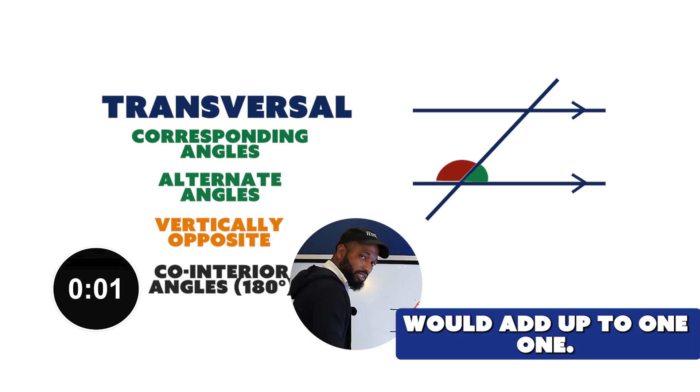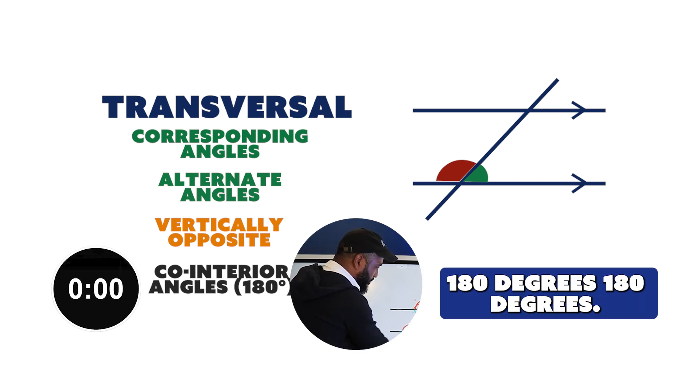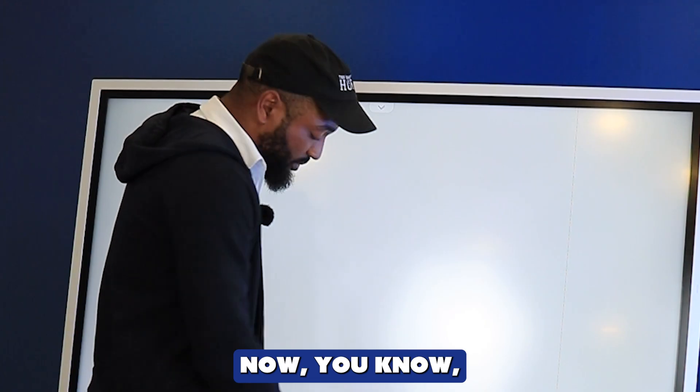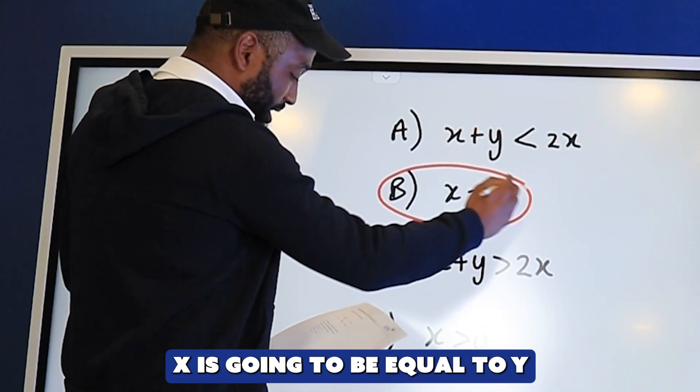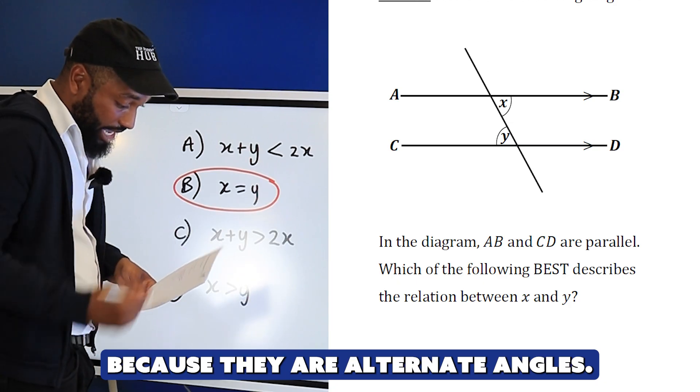Now you know. What was the answer for this question? Of course, x is going to be equal to y because they are alternate angles. That is it - marks collected in the exam.